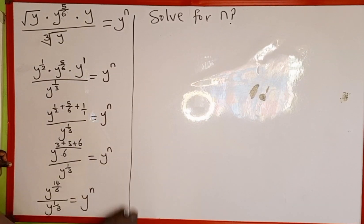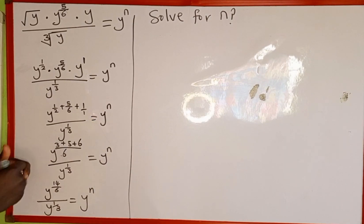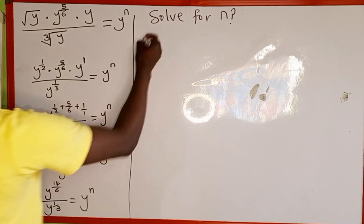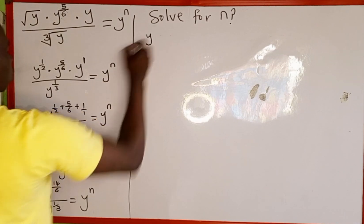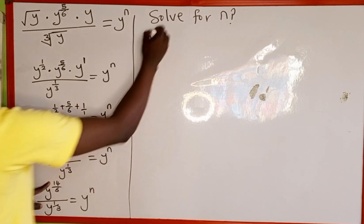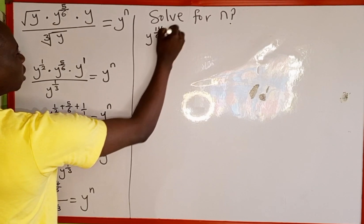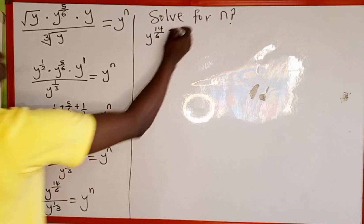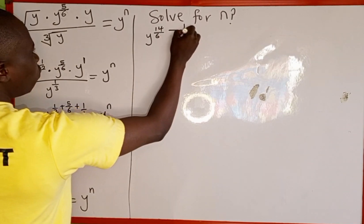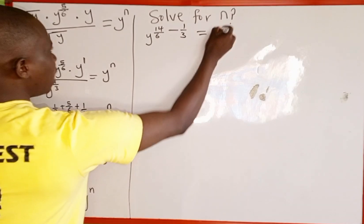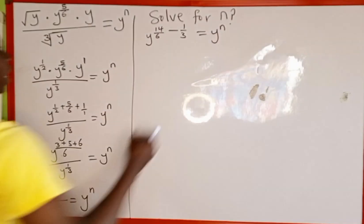The next thing we are going to recall is the division property of indices. Since the bases are the same and this is division, we write one of the bases and subtract the powers. The first power is 14 over 6, minus the second power 1 over 3, which is equal to y to the power of n.